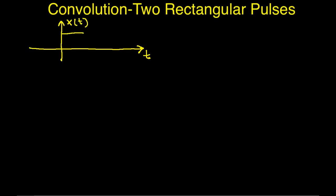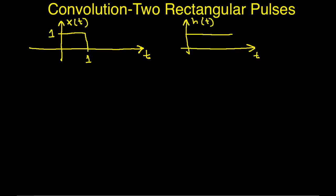The example is this: we have a pulse, x of t, that has amplitude 1 from 0 to 1 and is 0 elsewhere. We have a second pulse, h of t, of duration 3 and amplitude 1.